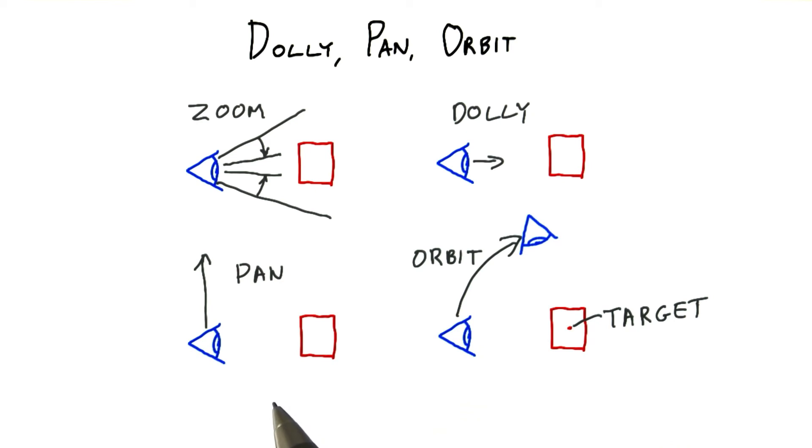The other common camera moves are panning and orbiting. Panning means moving left or right as you keep the camera pointed forward. For most programs we're using, the right mouse button pans.